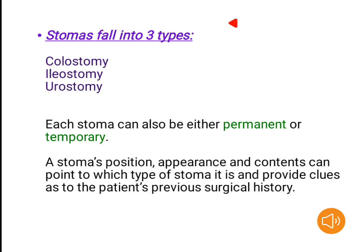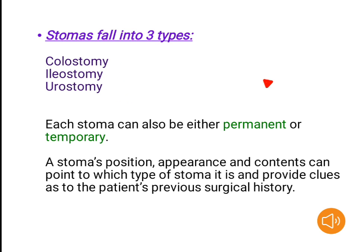Stomas fall into three types: colostomy, ileostomy, and urostomy. Each stoma can also be either permanent or temporary. A stoma's position, appearance, and contents can point to which type of stoma it is and provide clues as to the patient's previous surgical history.